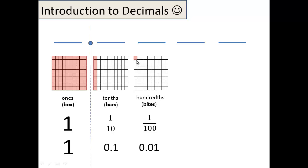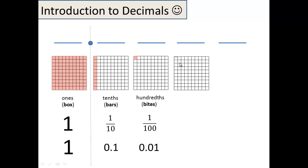Believe it or not, you could take this byte and cut it up into ten equal pieces. So one tenth of a byte looks like that — and I couldn't even make it small enough, this is probably even a little too big. But we call one tenth of a hundredth a thousandth, and I like to call that bits. That's what one thousandth looks like as a fraction and then as a decimal.